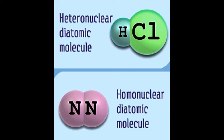Atomicity of a molecule is basically the number of atoms that make a molecule. Molecules can be monatomic, diatomic, or polyatomic depending on the number of atoms. A monatomic element consists of elements that exist on their own in nature — they do not need to combine with other elements in order to be stable.